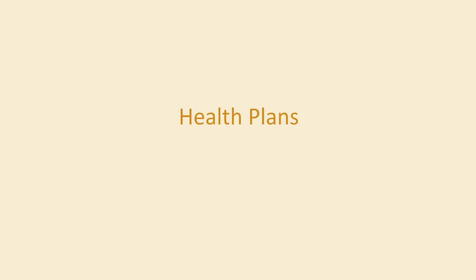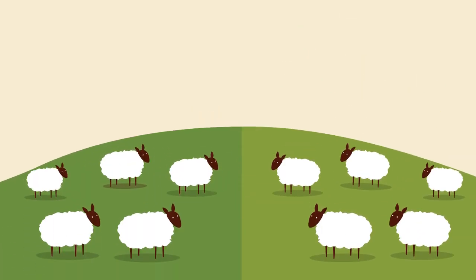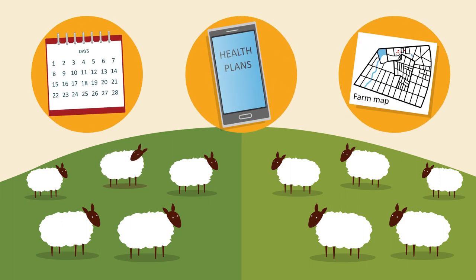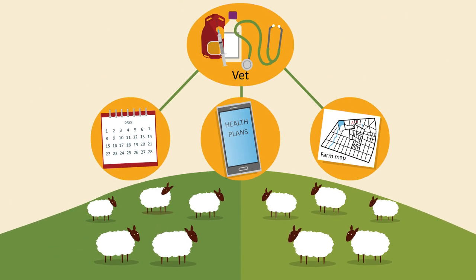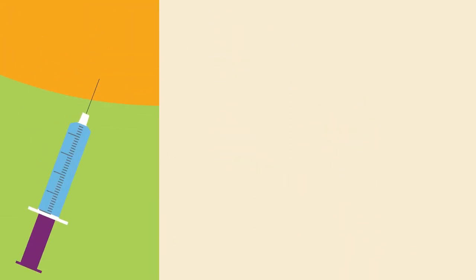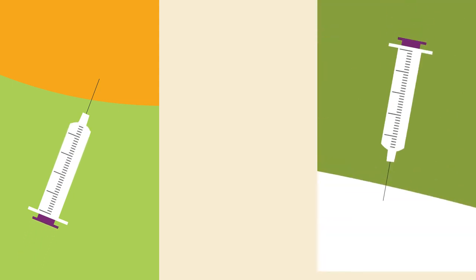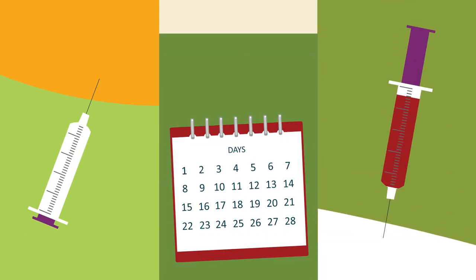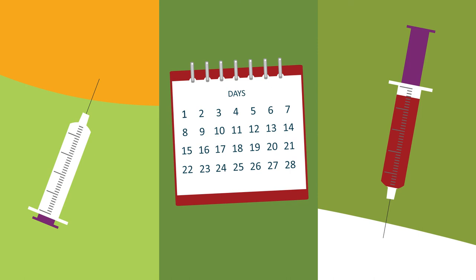You can help control the spread of disease by developing flock health plans in consultation with your vet. This allows you to create a disease control strategy before busy times, such as lambing, which can save you many headaches. These plans ensure preventative vaccines and diagnostics are used at the correct time, as well as screening and regular monitoring.